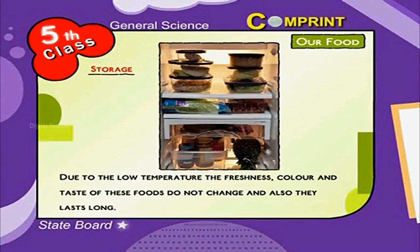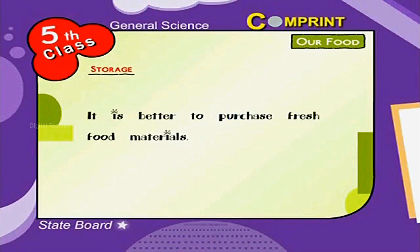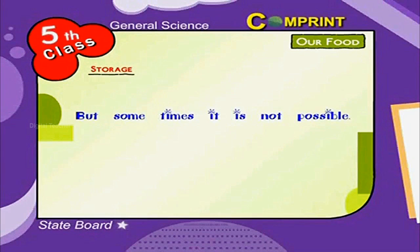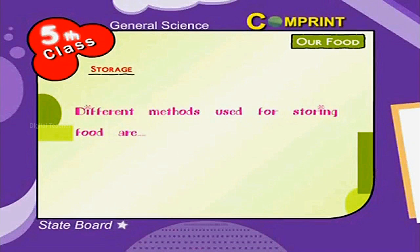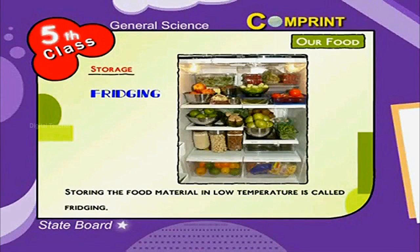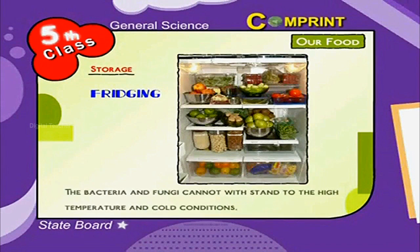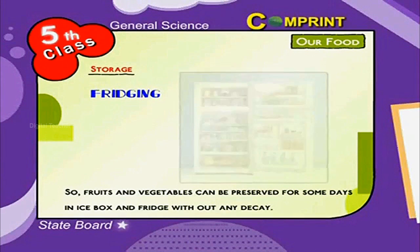Due to the low temperature, the freshness, colour and taste of these foods don't change and they last long. It is better to purchase fresh food materials, but sometimes it is not possible. Different methods are used for storing foods. Storing food material at low temperature is called fridging. Bacteria and fungi cannot withstand cold conditions, so fruits and vegetables can be preserved for some days in an ice box or fridge without decay.